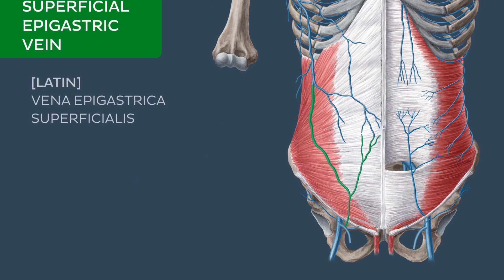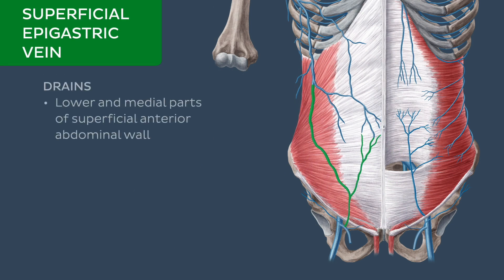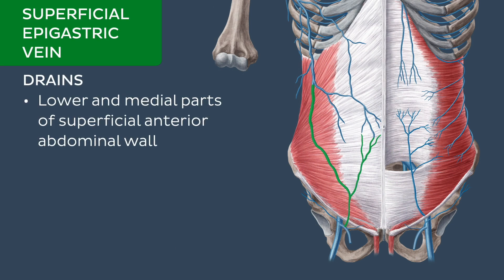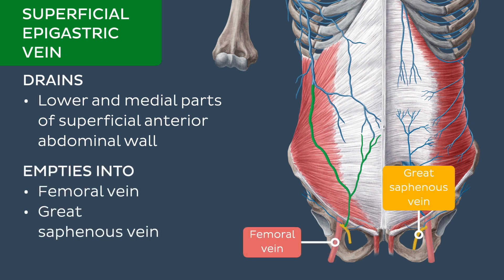As we can guess by its location, the superficial epigastric vein collects blood from the lower and medial parts of the anterior abdominal wall and empties into the femoral vein or great saphenous vein.